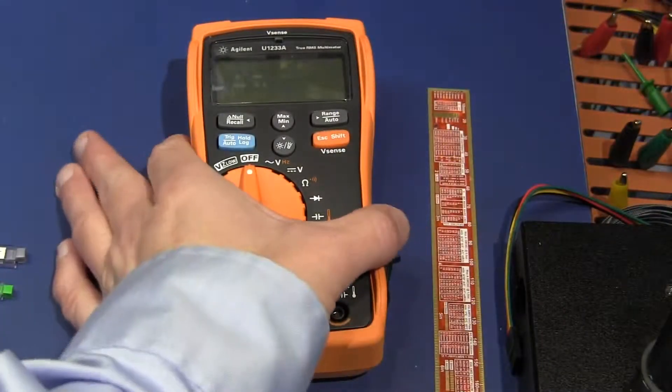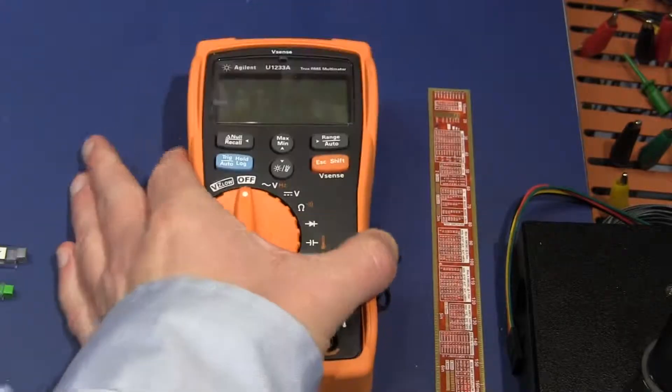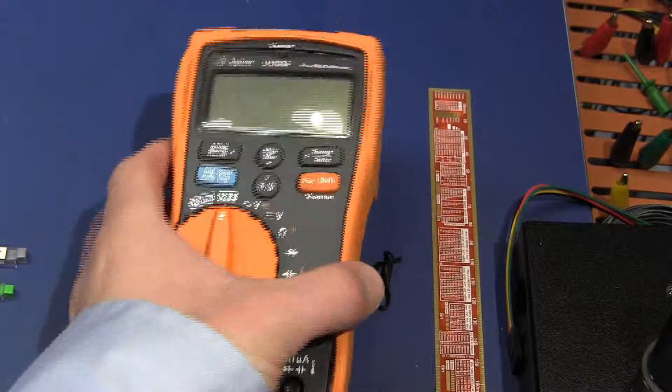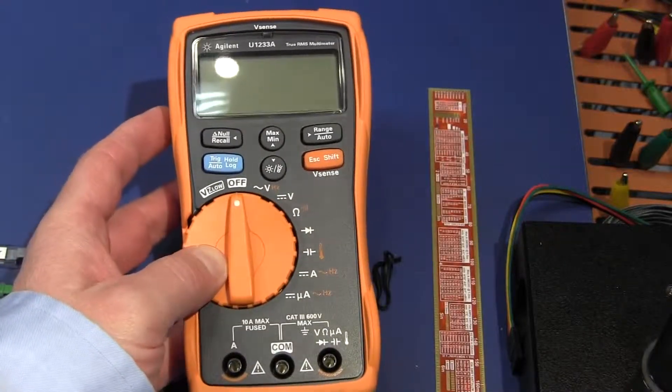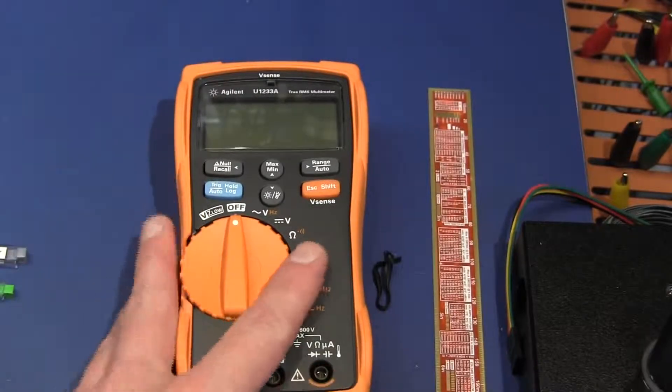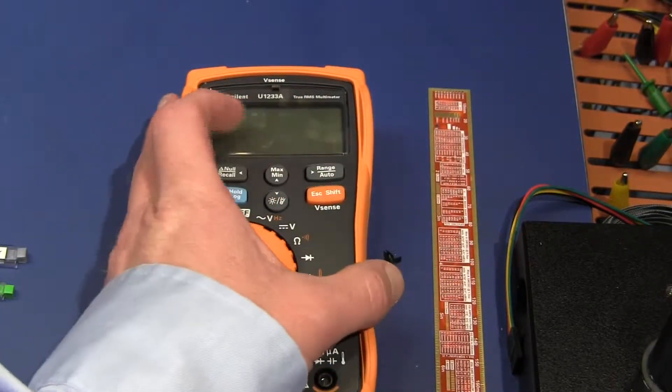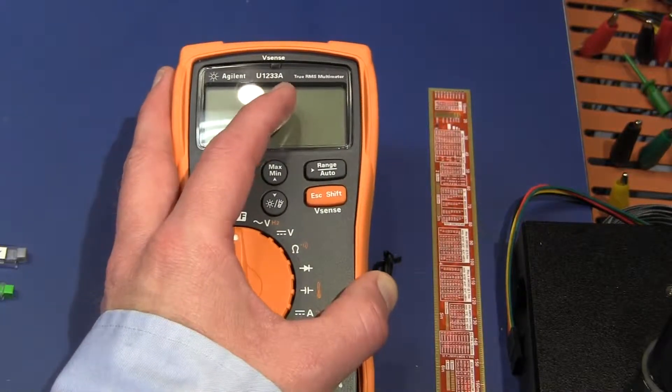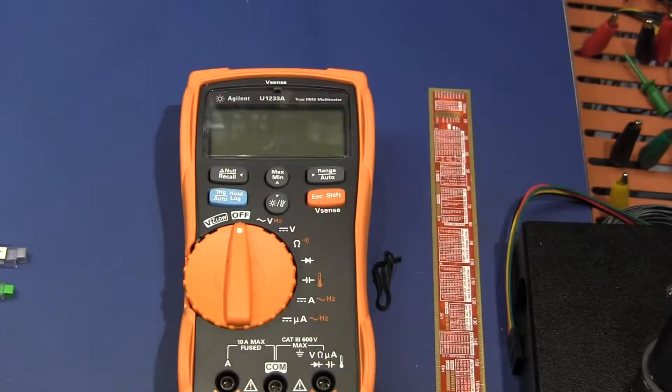Also the new Agilent handheld DMM, the U1233A has arrived, so I want to thank TestEquity for getting that to me in only about 10 days rather than the normal five to six week wait that has been going on. I'll get a short review out on this. I would like to focus on some aspects of it that haven't been covered on the U1200 series like the built-in voltage sense, so that will be interesting to try out.